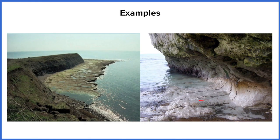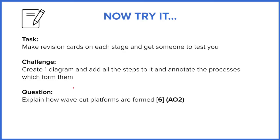You can already see a wavecut platform starting to form — it looks quite flat. The picture on the left shows a really pronounced wavecut platform at low tide, and you can even see where the platform itself is beginning to erode. This cliff would have once extended much further out. As the cliff was eroded at the high tide line, it moved further back, leaving this flat platform. In the distance you can see wavecut notches forming. That's it for today — complete the 'now try it' tasks for homework. Class dismissed.